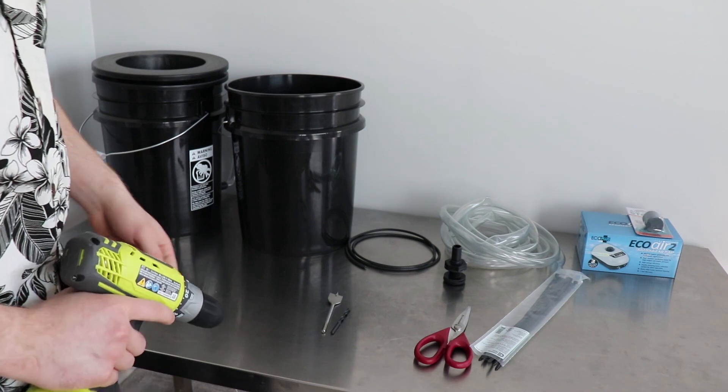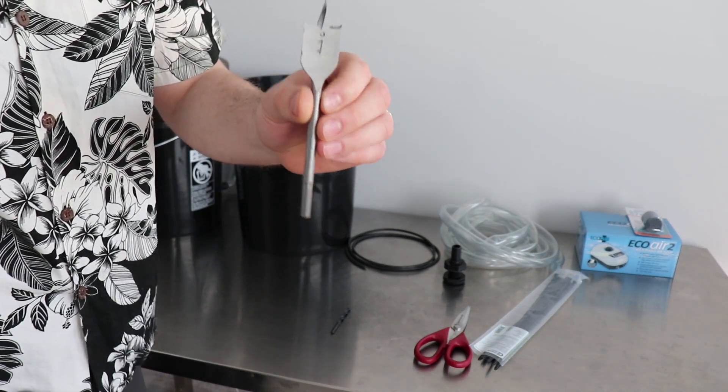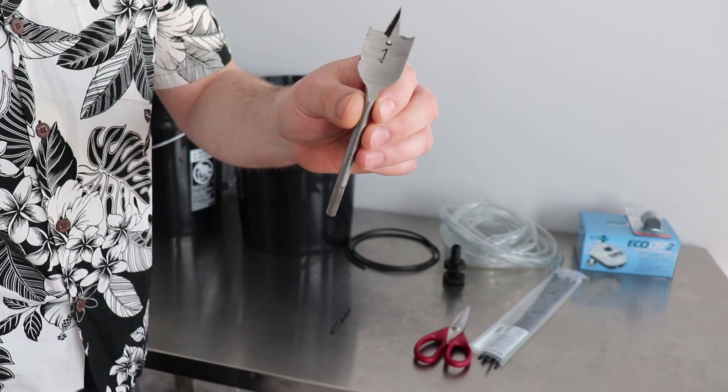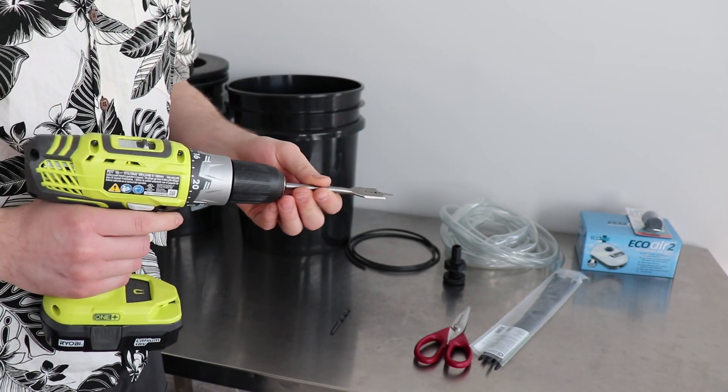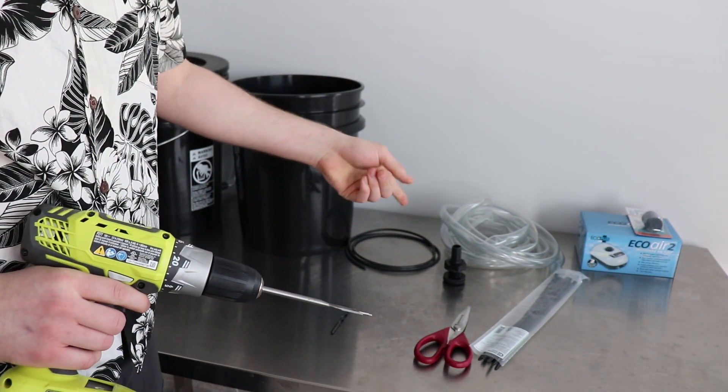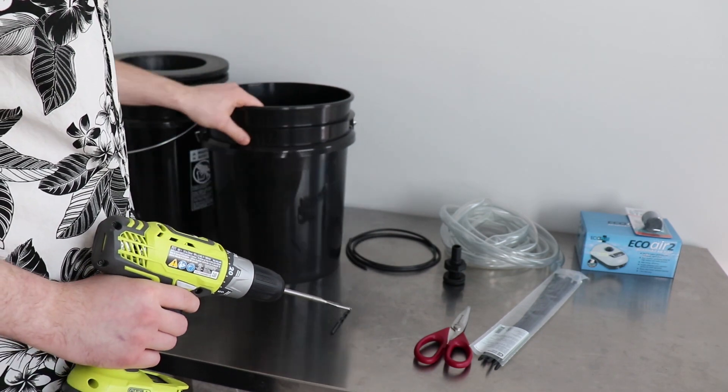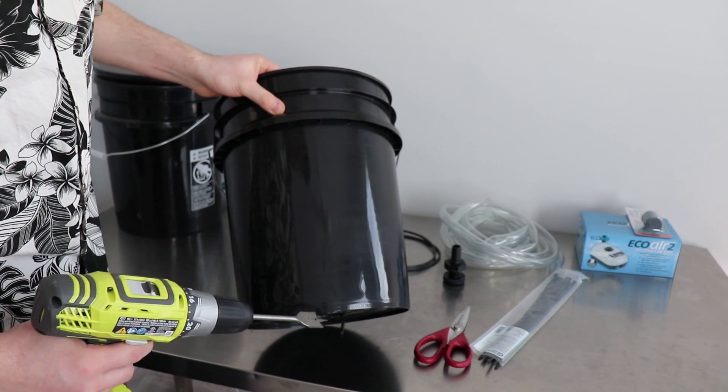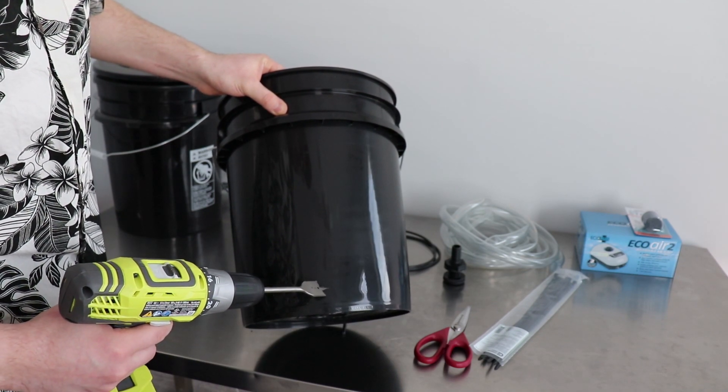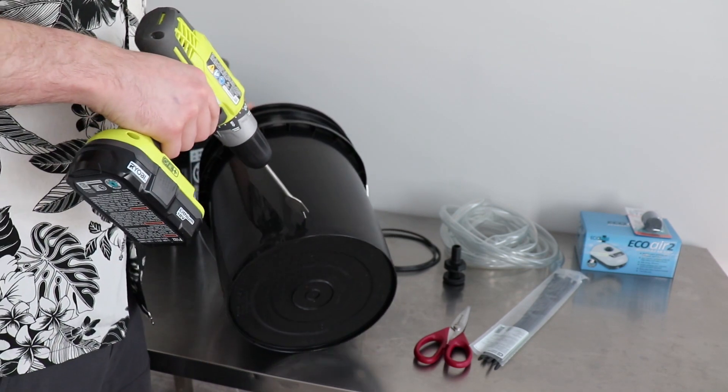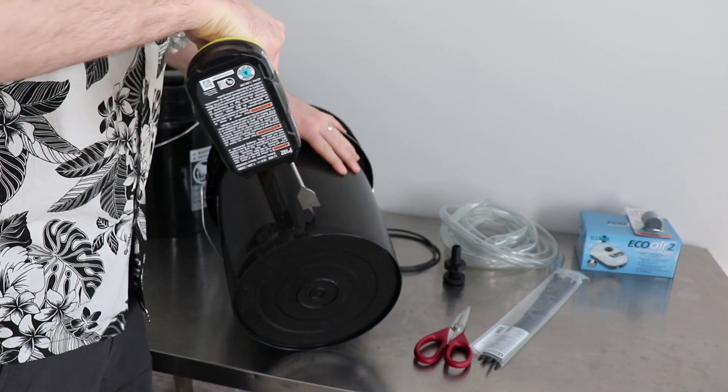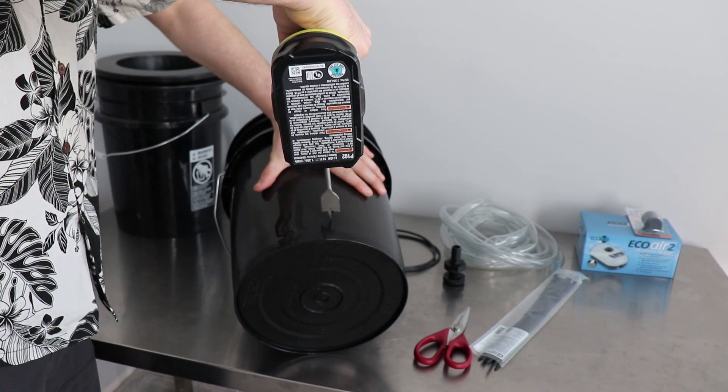So first thing you want to do is get your drill. This is a 1 inch drill bit, not sure the actual name, but that's what size it is for that fitting. So get your bucket, what I like to do is go maybe half an inch up, take it nice and slow.